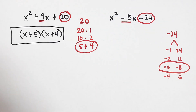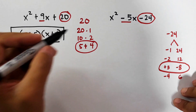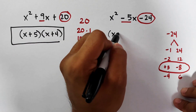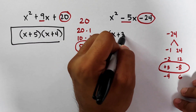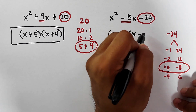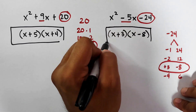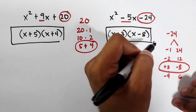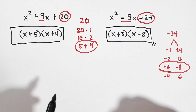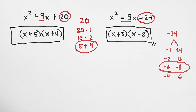So our factors should be x plus 3 and x minus 8. This is the easiest way to factor a given trinomial in which the coefficient of the first term is 1.